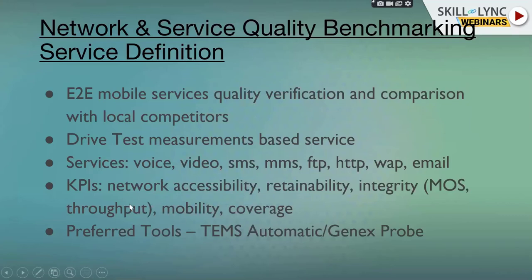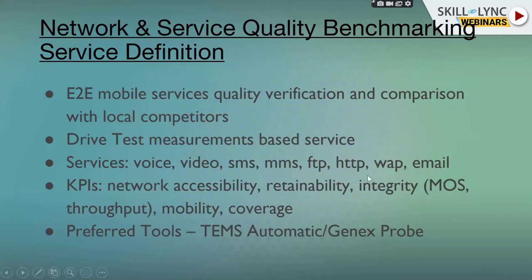The key network KPIs are: accessibility — the percentage of times you try calling and don't get a busy tone; retainability — the ability to retain a call without it being dropped (e.g., if you drop 5 times in 100 calls, retainability is 95%); and integrity — which is throughput, now very important because data is the new oil. With 5G we can go up to 1 gigabit per second, so you could download a large file in seconds. Integrity is arguably the most important KPI.